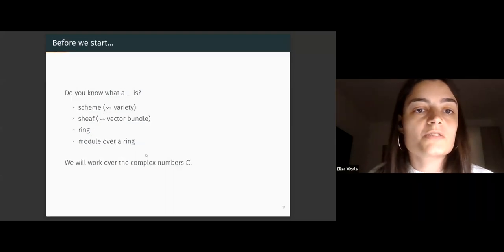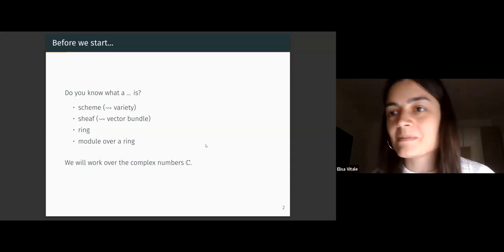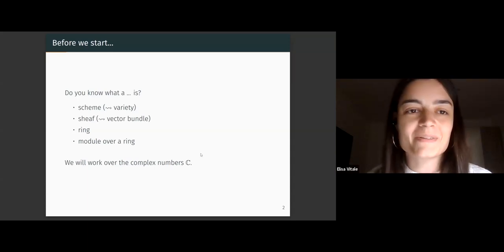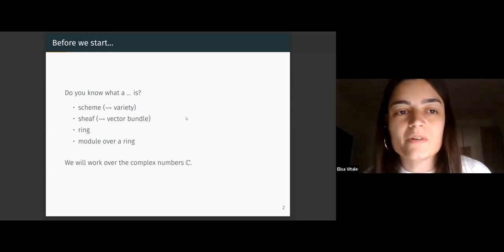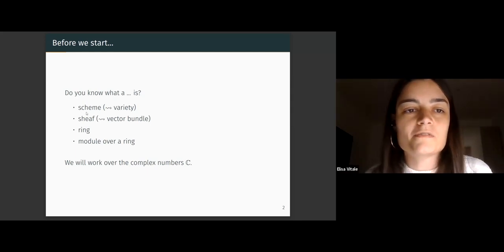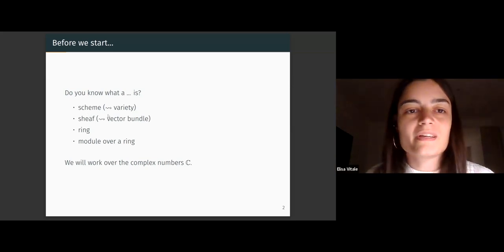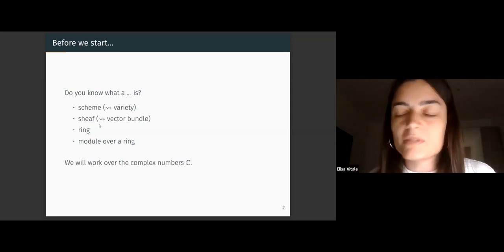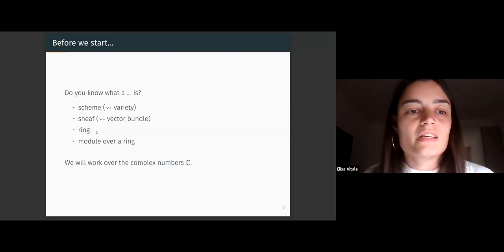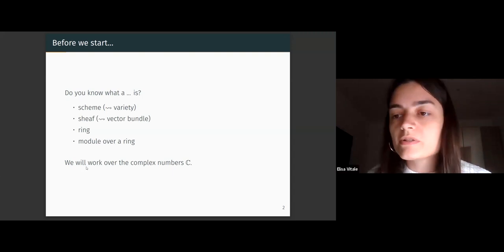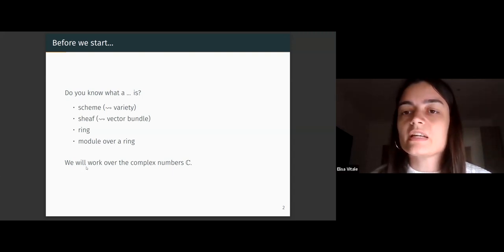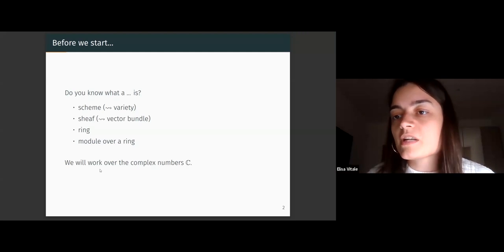I'll try to make my presentation accessible, but I will assume some basic notions of algebraic geometry. If you don't know what a scheme is, you can substitute this with variety. Whenever I talk about sheaves, I'll try to give some intuition using vector bundles. Everything I will say will be over the complex numbers, but if you replace that with any algebraically closed field, nothing should change.